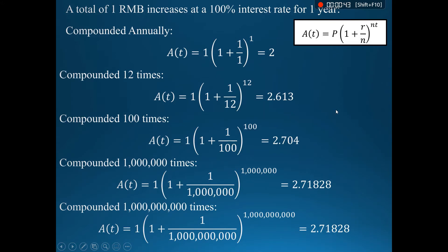Well, if I keep doing that, we'll actually hit an upper limit. So here I've got one RMB increasing at 100% interest rate for one year. Compounded annually, so at the end of the year, 12 times, 100 times, a million times, and a billion times. You can see my numbers are increasing, but we do hit an upper limit where there's not really a difference between a million times and a billion times.